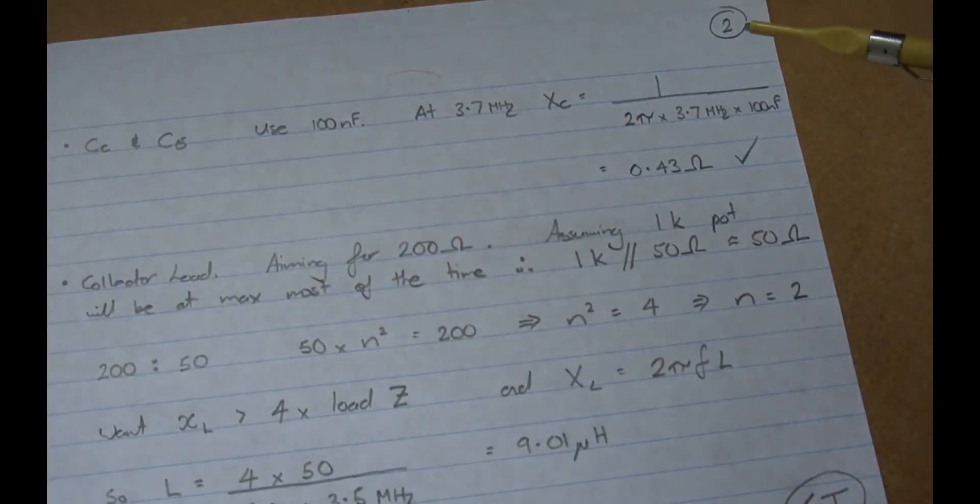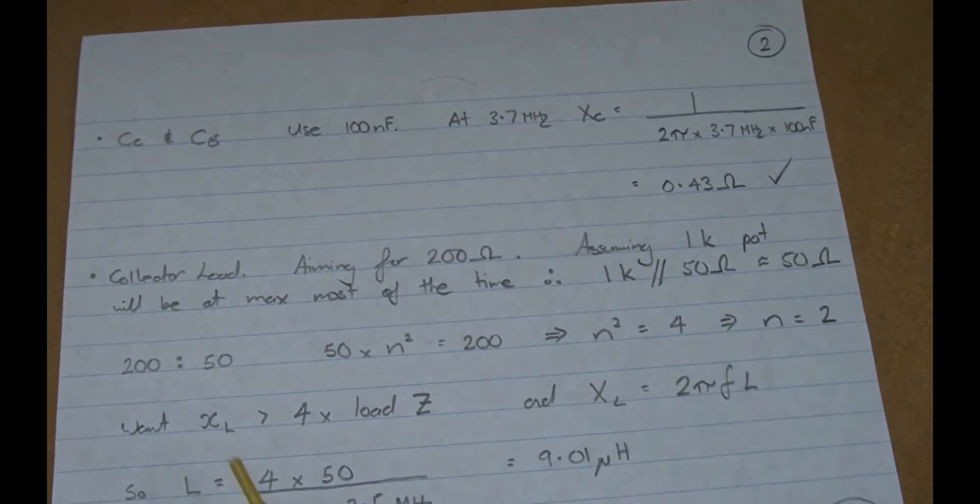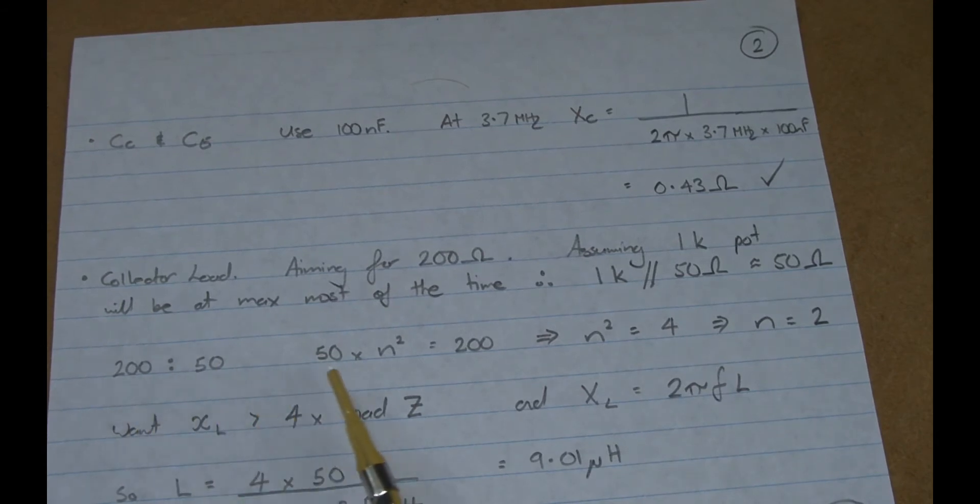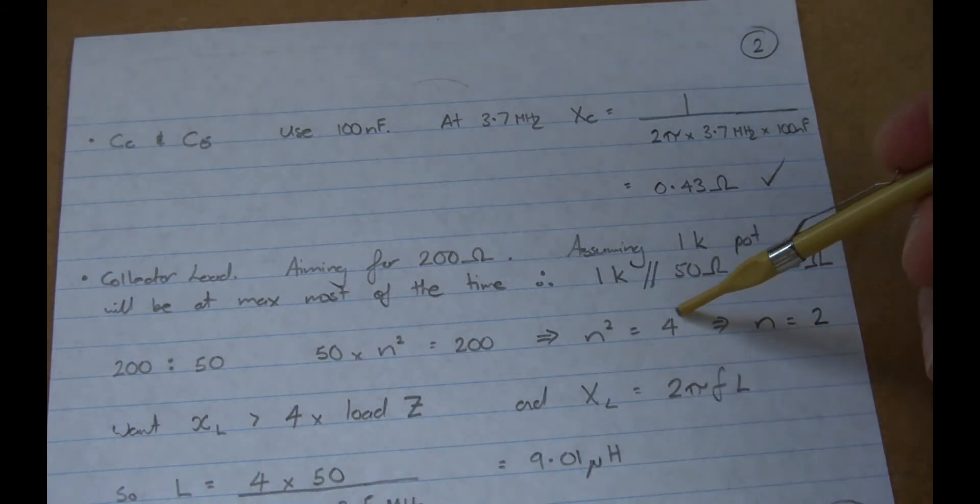So let's work that one out. So as we said here, we want to have a step up from 50 up to 200, and we know that the equation is 50 times the turns ratio squared equals 200. So that means n must equal 4, or n squared equals 4, and therefore n is the square root, which is 2. So that's how it's going to be, our turns ratio is going to be 2.